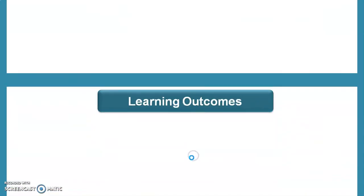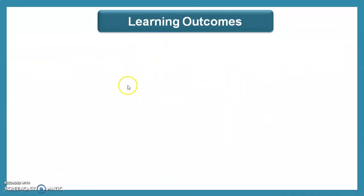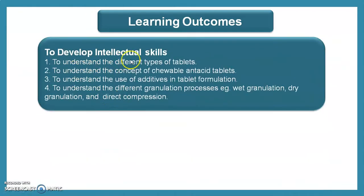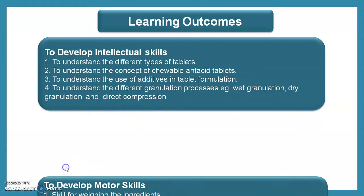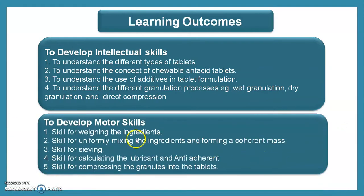Learning outcomes of our today's session: after watching this video, students are able to develop intellectual skills such as to understand the different types of tablet, the concept of chewable and antacid tablet, the use and additives in tablet formulation, the different granulation processes — wet granulation, dry granulation, and direct compression — and to develop motor skills such as weighing ingredients, uniformly mixing ingredients, forming a coherent mass, sieving, circulating the lubricant and anti-adherent agent, and compressing the granules into the tablet.